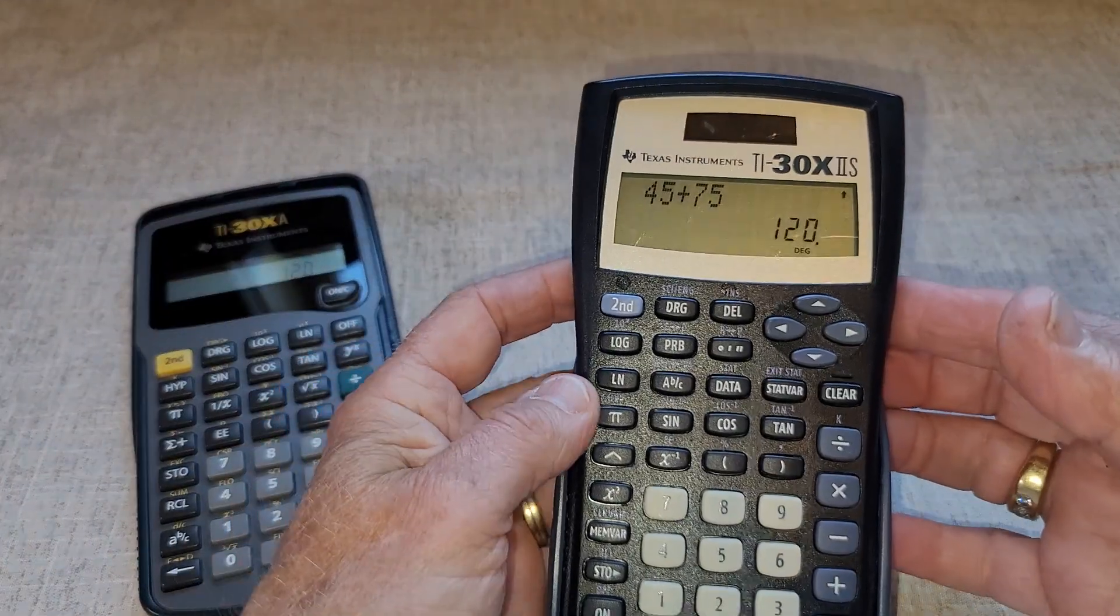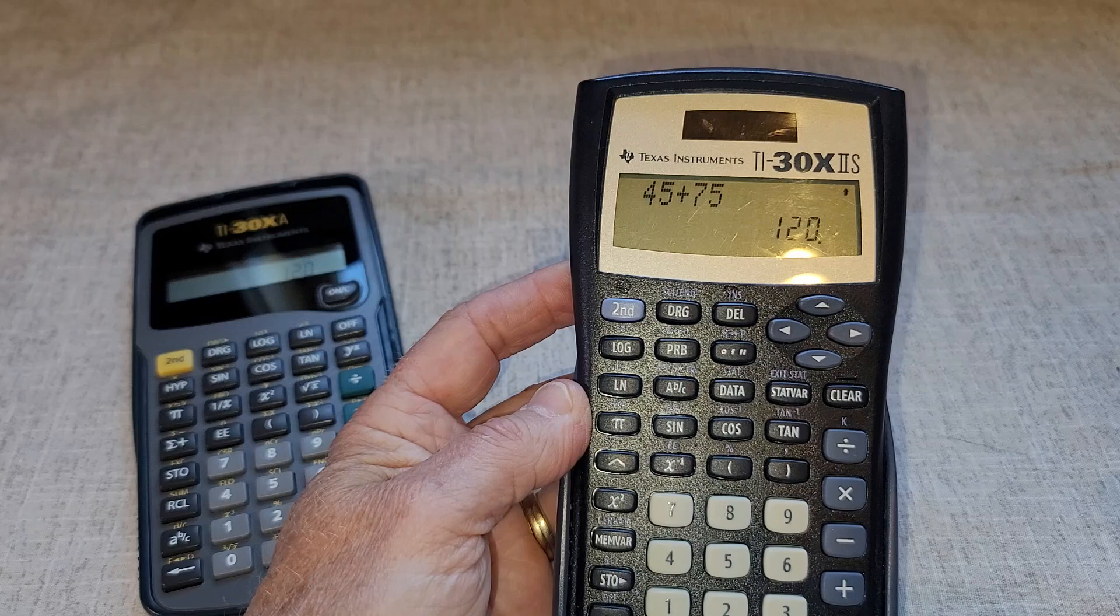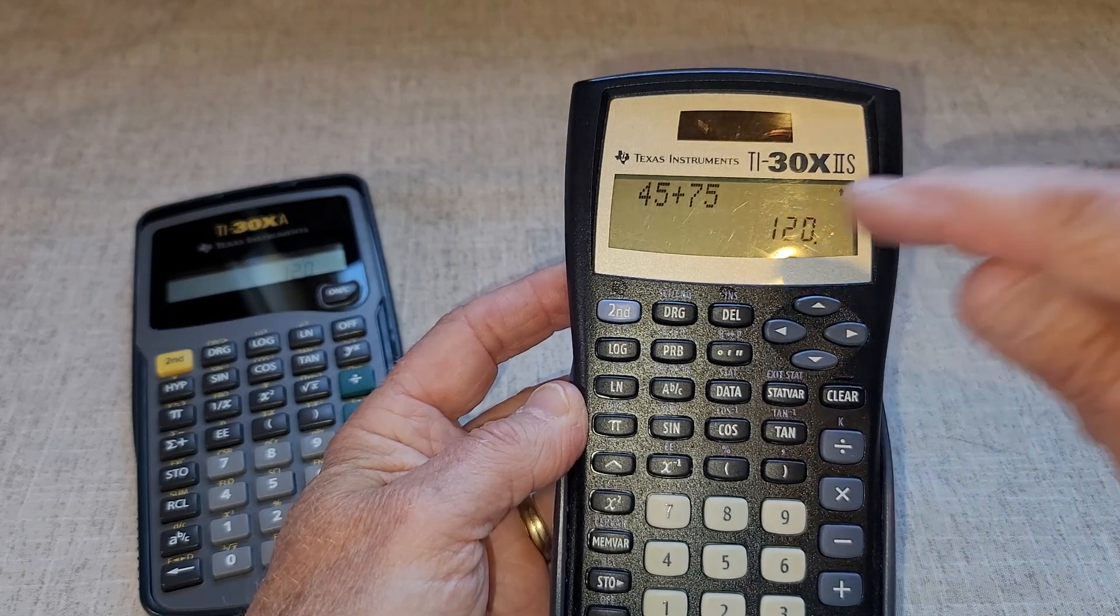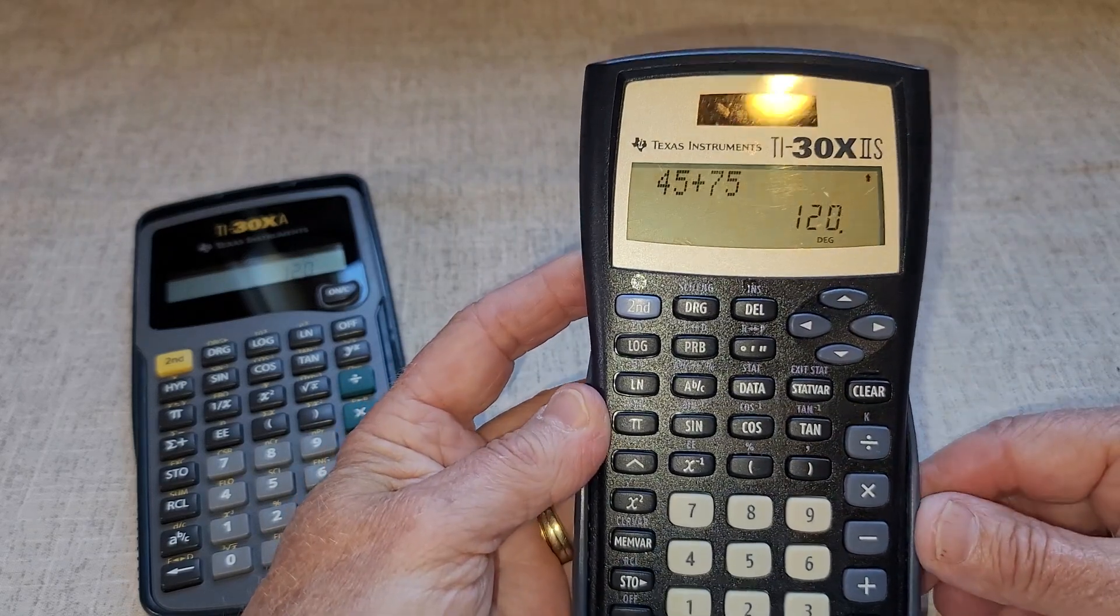Whereas with this one, if you need to go back and confirm your numbers, you can just do that right there because of the double layer, double lines there.